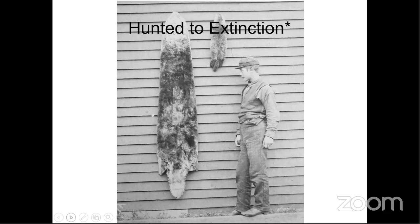Southern sea otters live to be around 23 years old and weigh about 65 pounds — they can be four feet long. By comparison, Alaskan sea otters can weigh up to 100 pounds and are substantially bigger. This historical picture from California shows two sea otter pelts, a mother and a baby. They were hunted to near-extinction; their numbers used to be in the tens of thousands, but in 1928 scientists accidentally discovered a single surviving raft of about 40 sea otters.